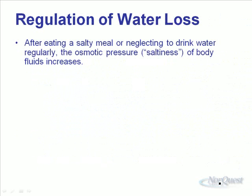After eating a salty meal or neglecting to drink water regularly, the osmotic pressure of our body fluids is going to increase. If we eat something salty or don't drink enough water, the ion concentration inside our blood is going to be high. The rest of our body tissues have a relatively low ion concentration, and so water is forced to flow from those cells into our circulatory system.